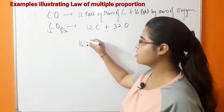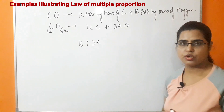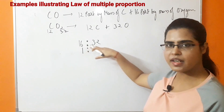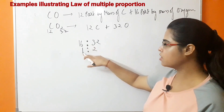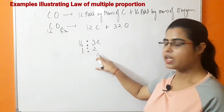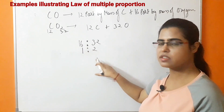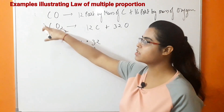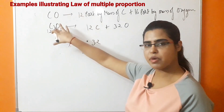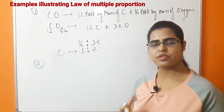In the first case oxygen has mass 16, and in the second case oxygen has mass 32. On simplification, dividing both sides by 16, the ratio of oxygen is 1:2. This is the simple ratio of oxygen combining with the fixed mass of carbon (12) in both compounds, confirming the Law of Multiple Proportions.